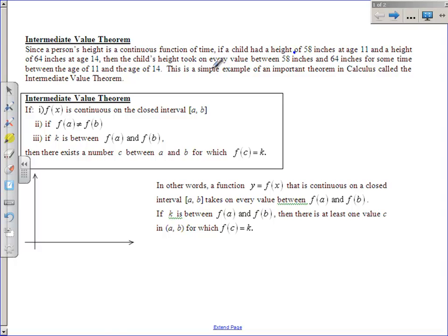In other words, at some point between your age of 11 and the age of 14 you were 61.5 inches or you were 58.9 inches or you were exactly 60 inches tall. Every value between 58 and 64 your height hit because you can't really just bounce from 58 to 60 inches in a split second. This is an example of the Intermediate Value Theorem.